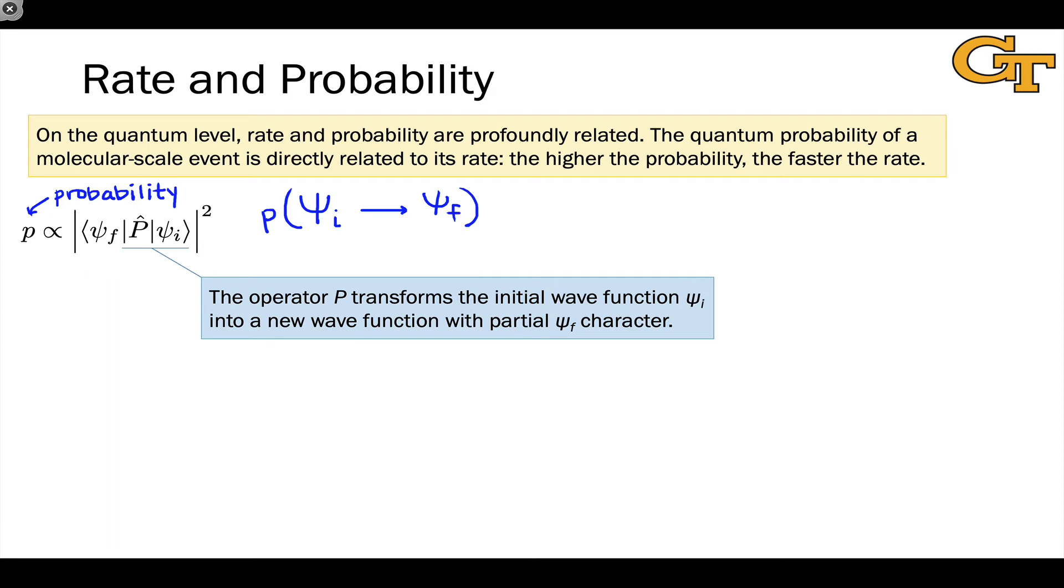To lay it out, the operator P is the mechanism that transforms the initial wave function ψ_i into a new wave function. And if that new wave function picks up character of the final wave function, there's some probability that ψ_i will become ψ_f.